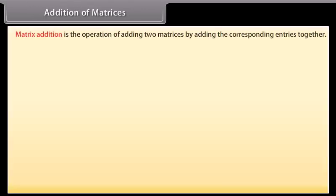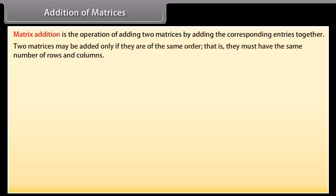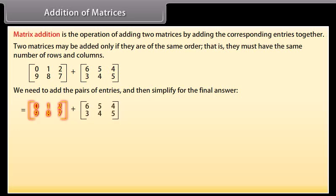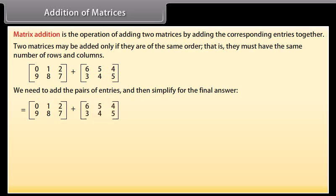Addition of matrices: matrix addition is the operation of adding two matrices by adding the corresponding entries together. Two matrices may be added only if they are of the same order, that is, they must have the same number of rows and columns. Let's add these matrices — we need to add the pairs of entries and then simplify. Row 1: [0, 1, 2] plus [6, 5, 4] gives [0+6, 1+5, 2+4]. Row 2: [9, 8, 7] plus [3, 4, 5] gives [9+3, 8+4, 7+5].